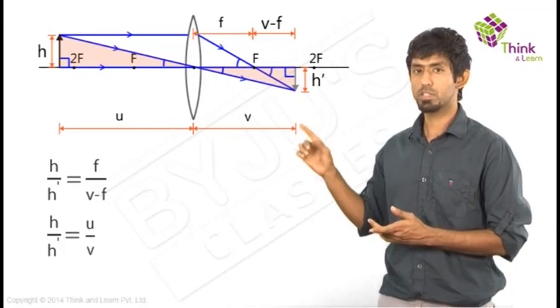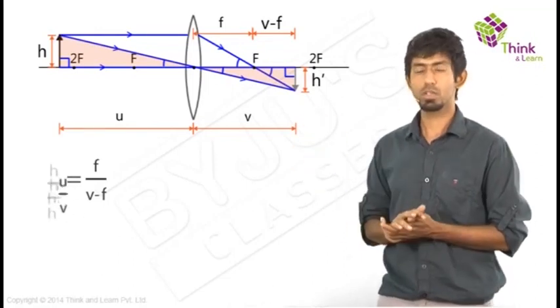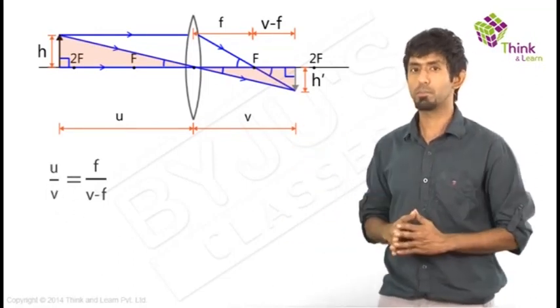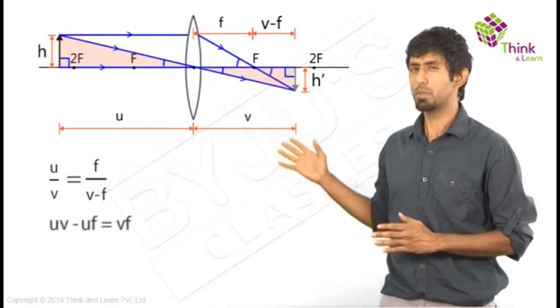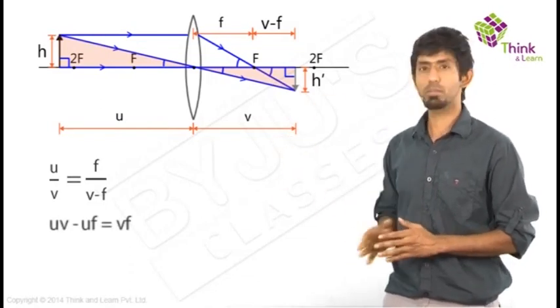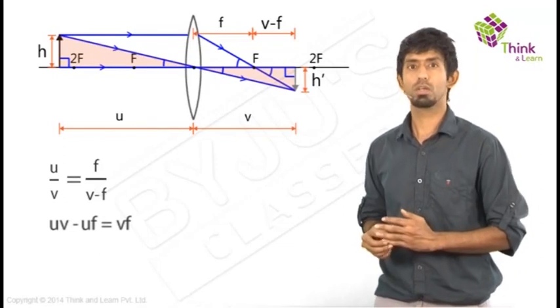Now what do you have here? H by H dash is common. So equate those two. Right? Cross multiply, you get a very similar looking equation, very familiar looking equation. Divide the whole thing by U by F. Don't ask me why we do that. Why do we do that?